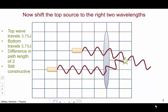To get to that particular point, the top wave has traveled three and three-quarter wavelengths, while the bottom wave has traveled five and three-quarters. So the difference in optical path length is two wavelengths, and we still get constructive interference.